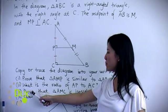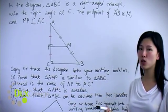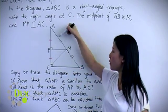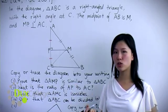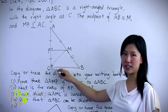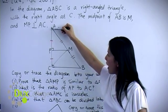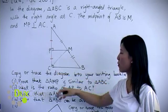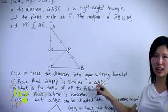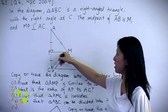For part three, we need to prove that triangle AMC is isosceles. The first thing to do is join MC. To show that triangle AMC is isosceles, we first prove that triangles APM and CPM are congruent. AP equals CP because from part two, the ratio of AP to AC equals one half, so AP must equal PC.